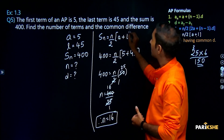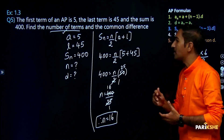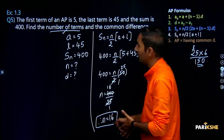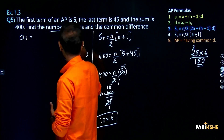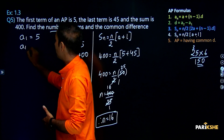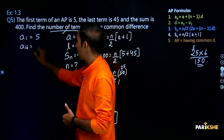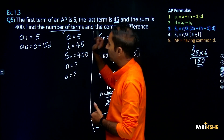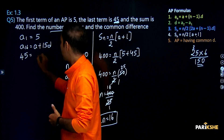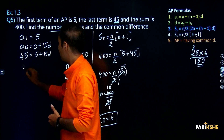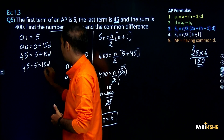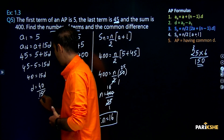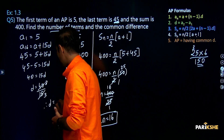So n is equal to 16 is the answer — number of terms is 16. Next, finding the common difference: since n is equal to 16, the last term is the 16th term. So a16 = a + 15d = 45. Substituting a = 5: 45 minus 5 is equal to 15d, so d is equal to 40 divided by 15, therefore d is equal to 8 by 3.